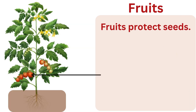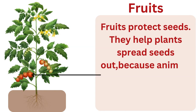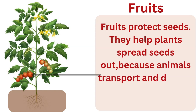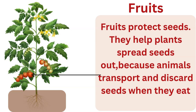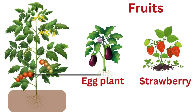Fruits protect seeds. They help plants spread seeds out because animals transport and discard seeds when they eat fruits. Some examples of plant fruits we eat are eggplant and strawberry.